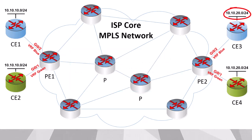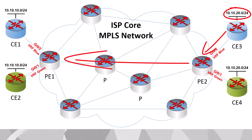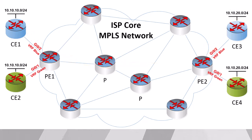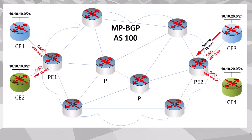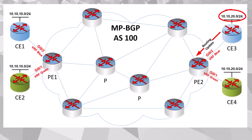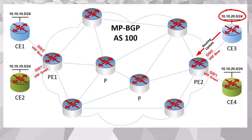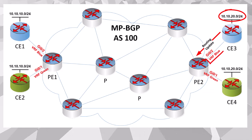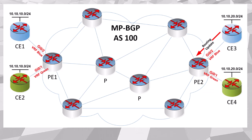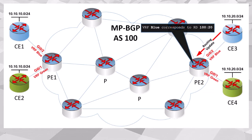We'll be examining how this network here is advertised such that PE1 will learn about it appropriately and inform CE1 of that network. Keep in mind that everything we're going to be looking at here is on the control plane — no user data is being exchanged; we're just talking about the advertising of networks. So initially, CE3 informs PE2 about its 10.10.20.0/24 network using whatever routing protocol is configured between these two devices. Once PE2 receives this, it takes a look at the VRF on which the interface is configured and checks to see what RD corresponds to that VRF.